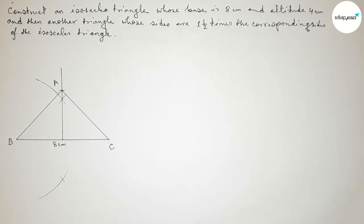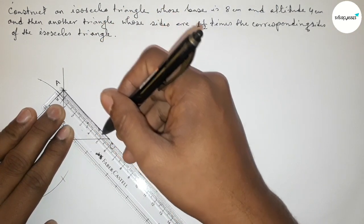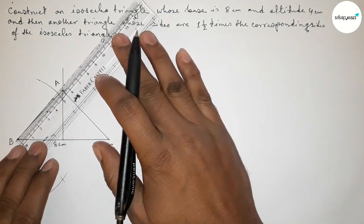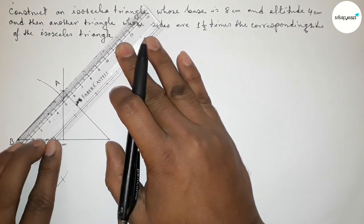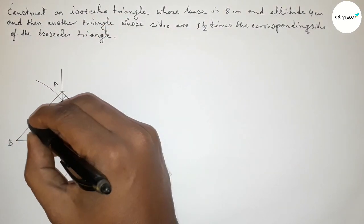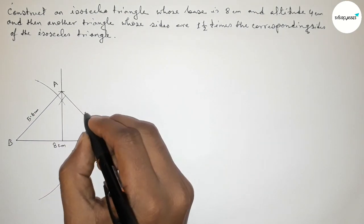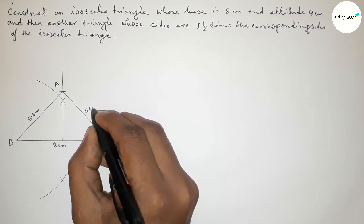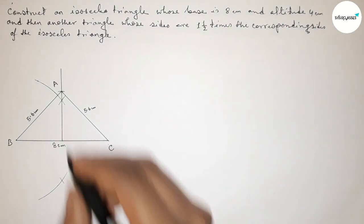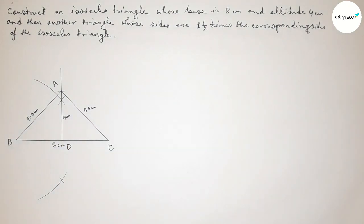Now measuring the length of AC and AB. The length of AC is approximately 5.6 centimeters, and AB is also approximately 5.6 centimeters. Both sides are 5.6 centimeters approximately, confirming it is isosceles. Taking point D — AD equals 4 centimeters.